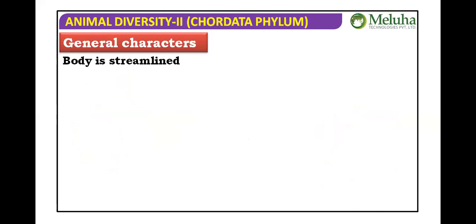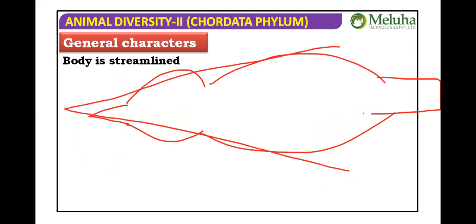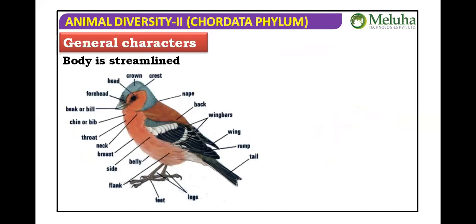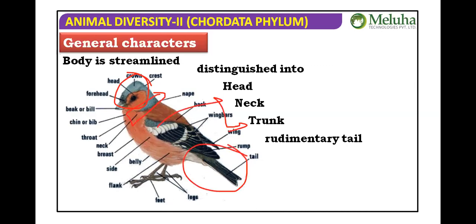Now let's move to general characters. The body is streamlined, similar to what we saw in fishes — a spindle-shaped body that reduces air resistance during flight. The body is distinguished into head, neck, trunk, and a rudimentary tail, which is much shorter than in reptiles.